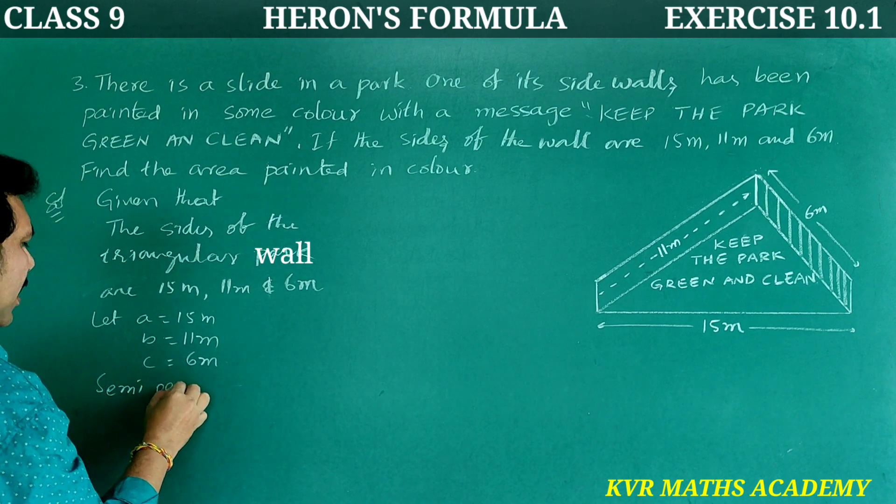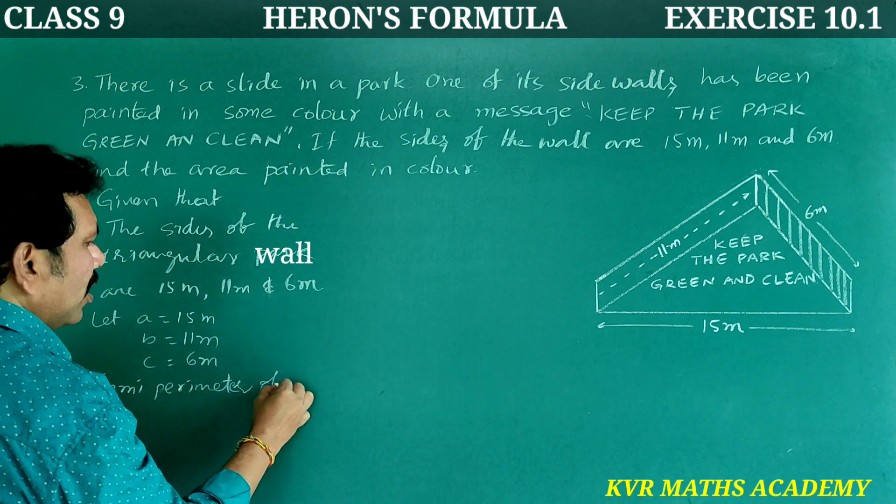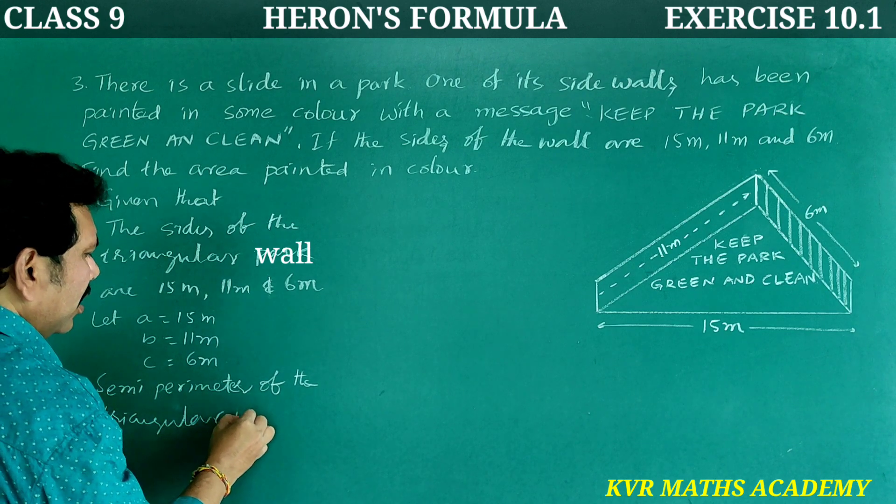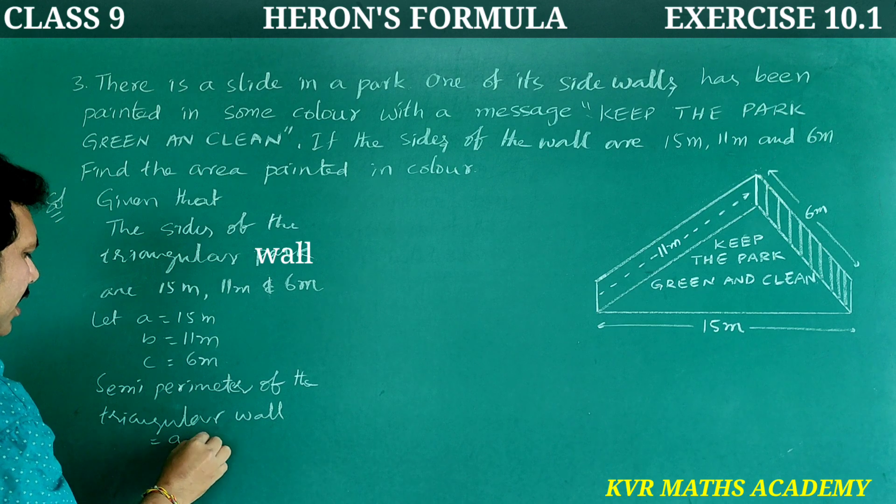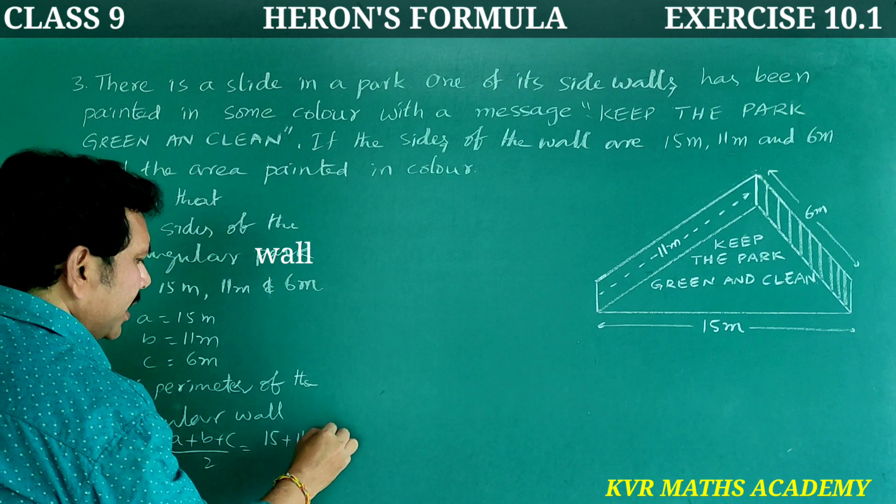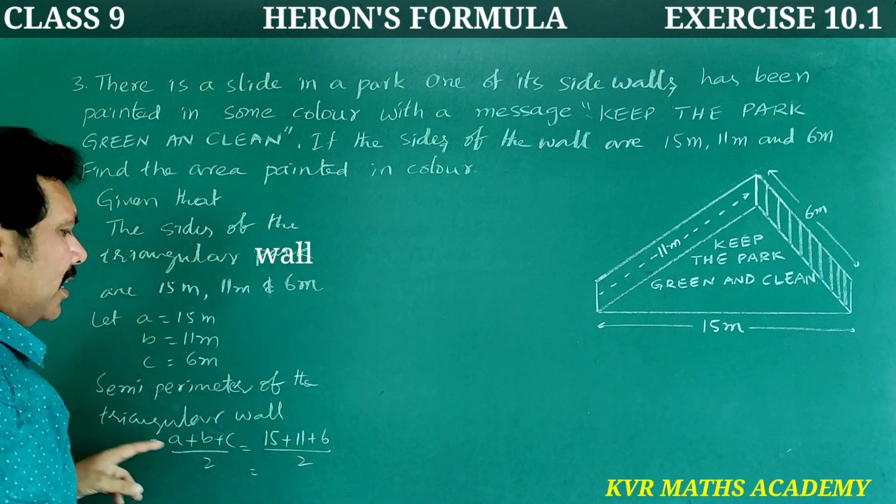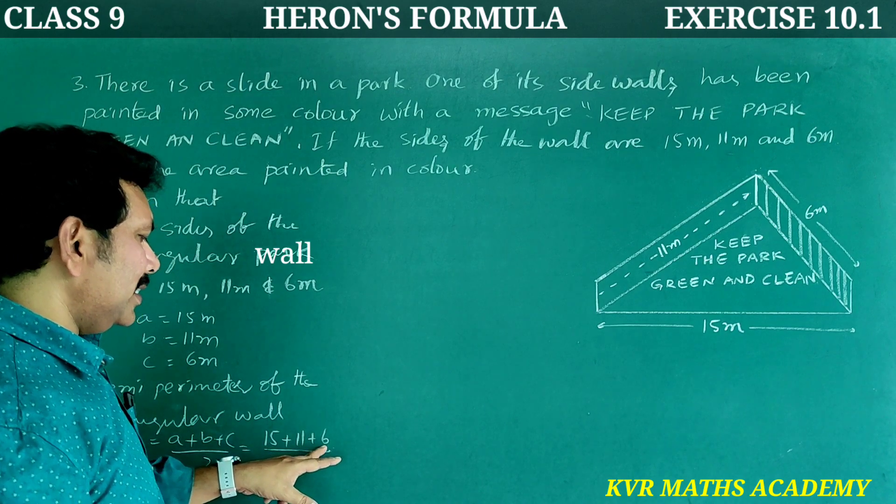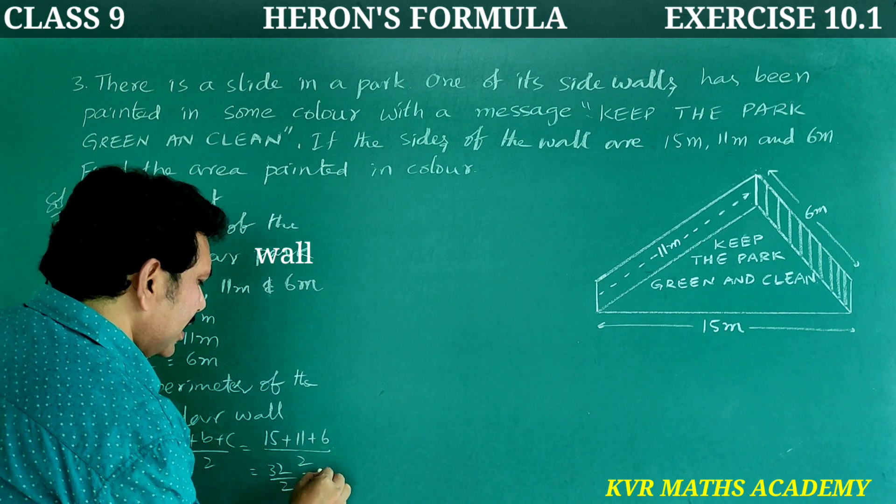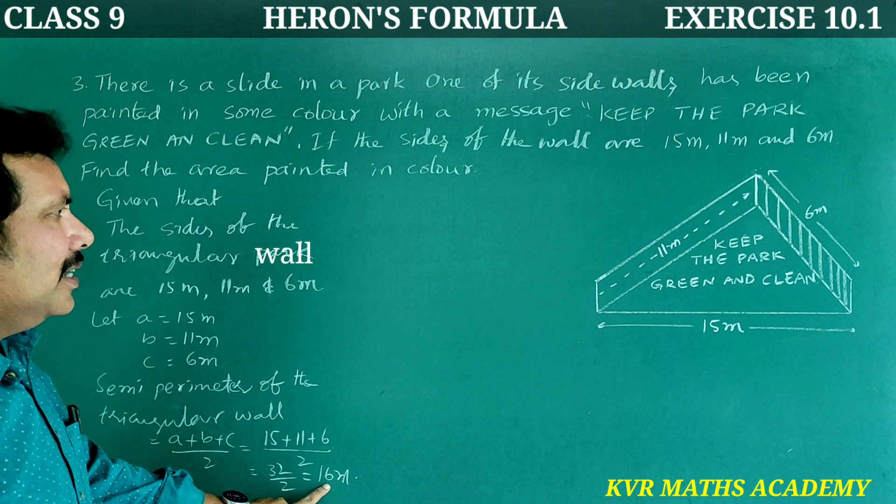Now, semi perimeter of the triangular wall is equal to A plus B plus C by 2, that is equal to 15 plus 11 plus 6 by 2. This is 15 plus 11 is 26, 26 plus 6 is 32, 32 by 2 that is 16 meters.